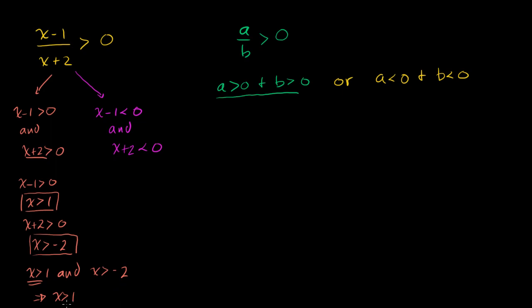We can verify this: let's say x equals 2. Then 2 minus 1 is 1, over 2 plus 2 — that's a positive number. So x equals 2 works. Now let's do the situation where both of these are negative.